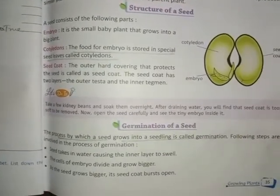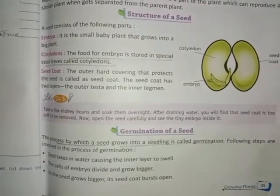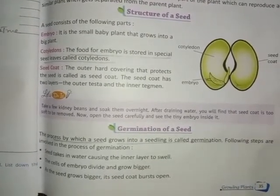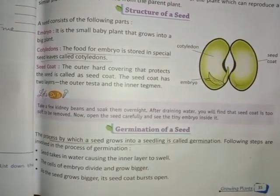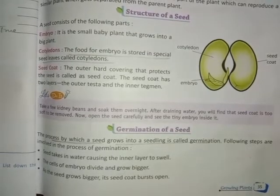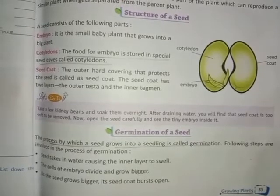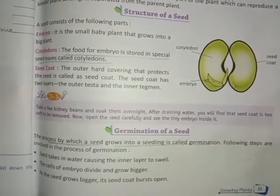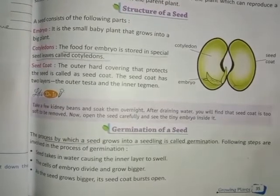Now, germination of seed. Germination is the growth of a plant when the seed begins to sprout. Seeds have a seed coat, a protective layer on the outside. Inside the seed there is a cotyledon that protects and provides food for the baby plant, and the embryo — the baby plant inside the seed — that has root, stem and leaves. The process by which a seed grows into a seedling is called germination.